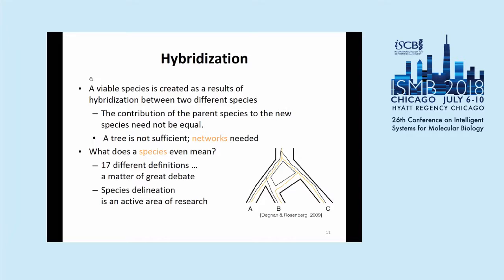Thinking about networks is very difficult — there are computational problems and also basic conceptual problems. If species can produce offspring together, what is a species anyway? You have to think about how you define a species, and if two things have just barely diverged and then come back to have some gene flow, were they different species to begin with? These are fundamental questions that I don't think we have good answers for yet.